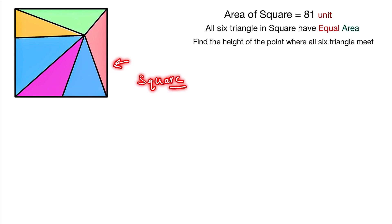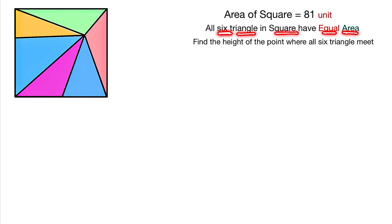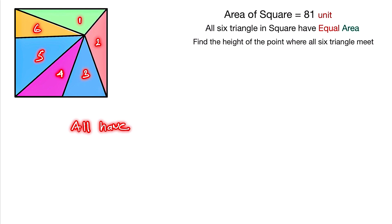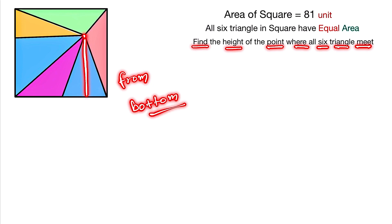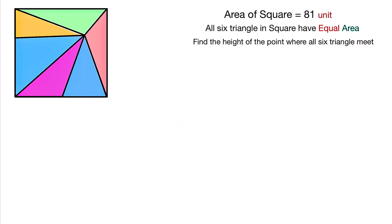This one is a square and the area of the square is given as 81. There are six triangles in the square and each have equal area — all six triangles: 1, 2, 3, 4, 5, and 6. We need to find the height of the point where all six triangles meet, from the bottom of the square.